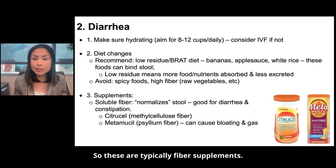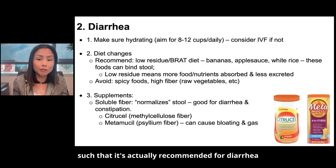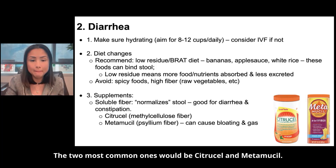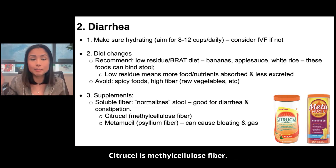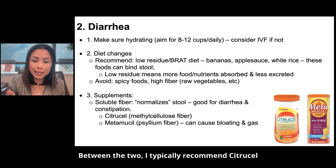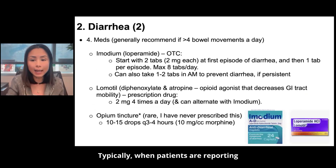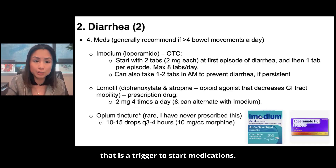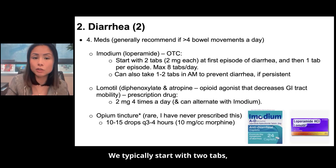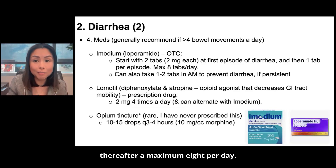What about supplements? These are typically fiber supplements, and the goal is really to normalize the stool — they're actually recommended for both diarrhea and constipation. The two most common ones would be Citrucel, which is methylcellulose fiber, and Metamucil, which is psyllium fiber. Between the two, I typically recommend Citrucel because Metamucil can cause bloating and gas. For medications, when patients are reporting four or more bowel movements a day, that is a trigger to start medications. The first go-to is Imodium — we typically start with two tabs (2 mg each) at the first episode of diarrhea, then one tab every time after, maximum eight per day.